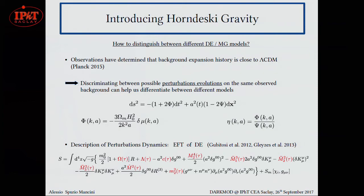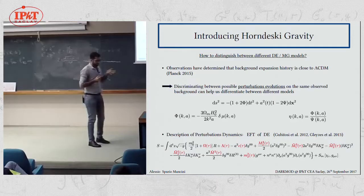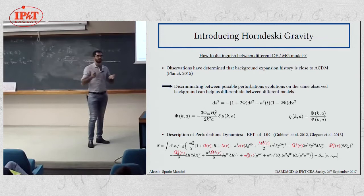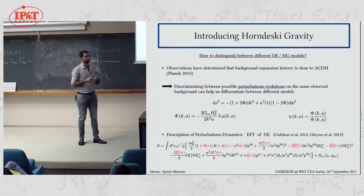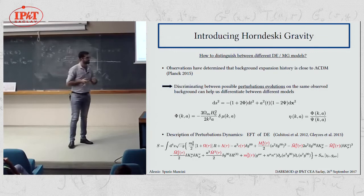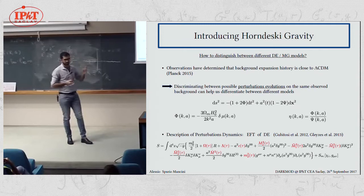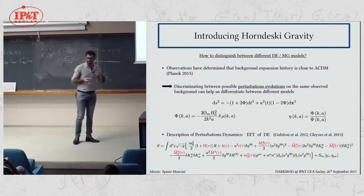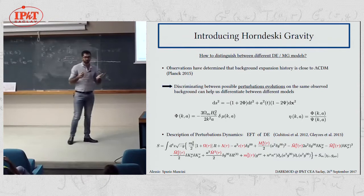Now I would slowly move to the observational side. The question arises in a more general way, how do we distinguish between different models from the observational point of view? We have data that tells us that we have to move to the level of perturbations. So we start from our perturbed metric in Newtonian gauge, where we define the Bardeen potential phi and psi, and we define standard parameters like mu and eta as deviations from general relativity, if they are different from one.